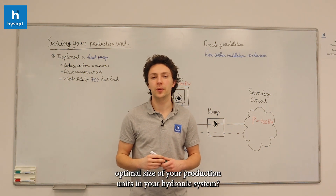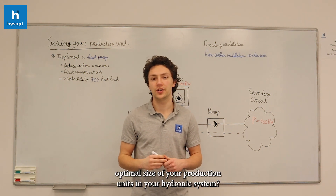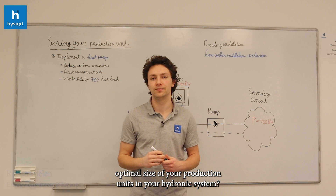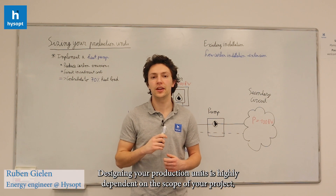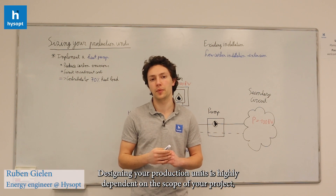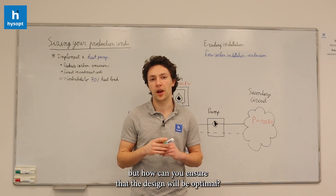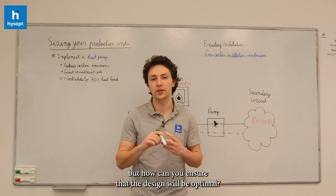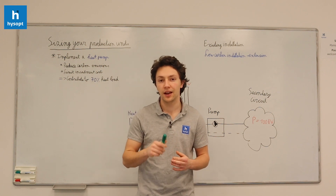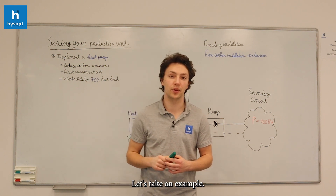How can you determine the optimal size of your production units in your hydronic system? Designing your production units is highly dependent on the scope of your project, but how can you ensure that your design will be optimal? Let's take an example.